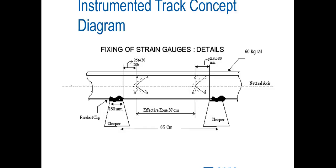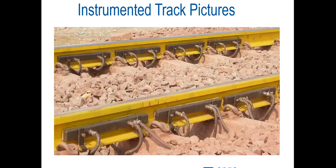The strain gauges are generally fixed on a 60 kg rail, with a standard distance maintained between sleepers. These are mostly technical installation details. In practice, you can see the strain gauges fitted directly on the track, with cables carrying the signal away for processing.